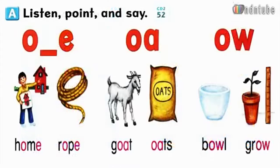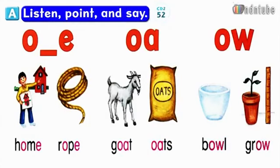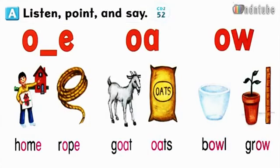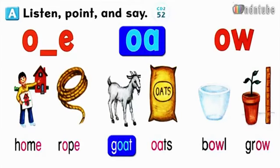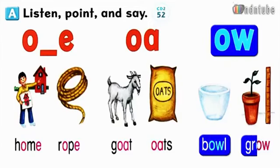Page 64. Let's read. A. Listen, point, and say. O-E: Home, Rope. O-A: Goat, Oats. O-W: Bowl, Grow.